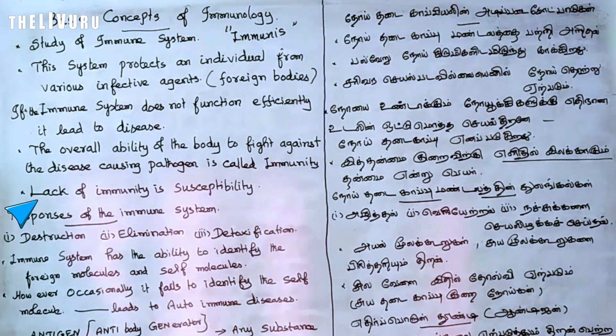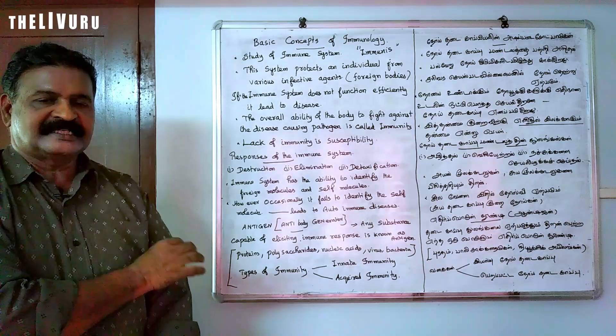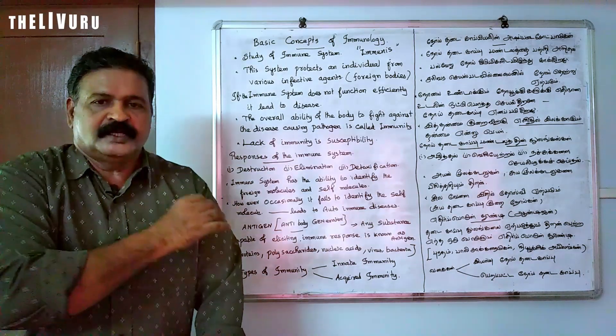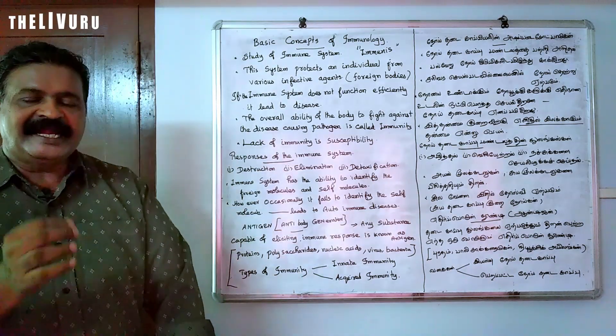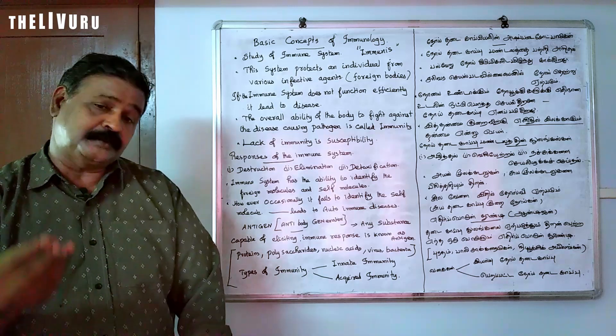The lack of immunity is known as susceptibility. When a person lacks immunity, they become susceptible to disease.